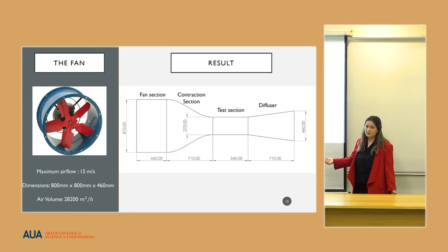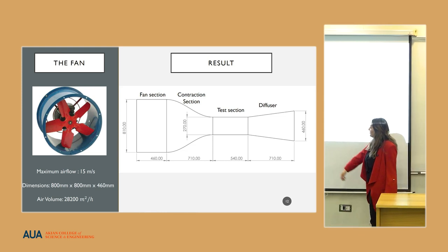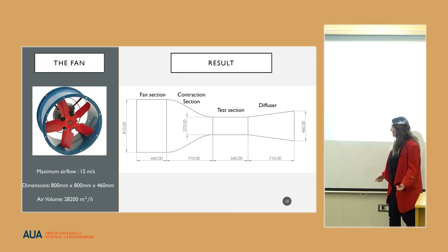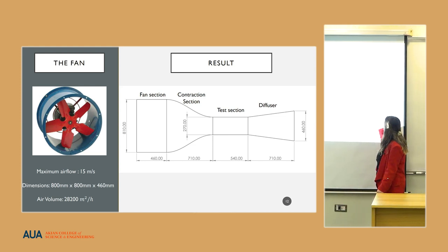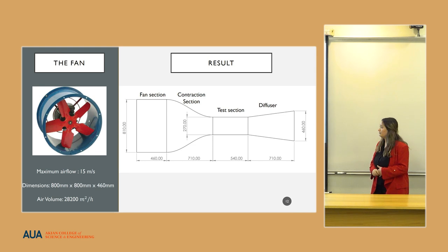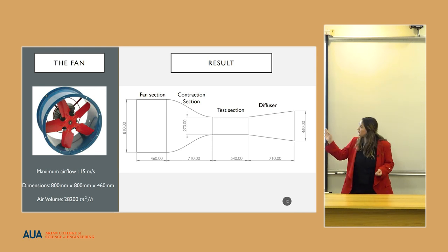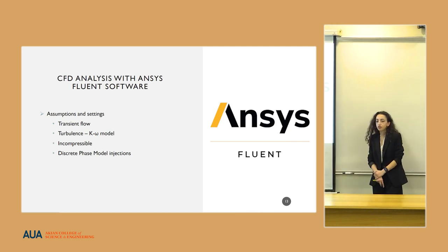As we've told earlier, the fan is an essential part of the design. This fan was selected for our needs, for the needs mentioned before. This one provided 15 meters per second in the inlet part to decide the dimensions. This is the sketch of the first design made based on the fan and other theories. To ensure that we have enough velocity, efficient velocity, and the design requirements are met, CFD analysis with ANSYS Fluent software was conducted.